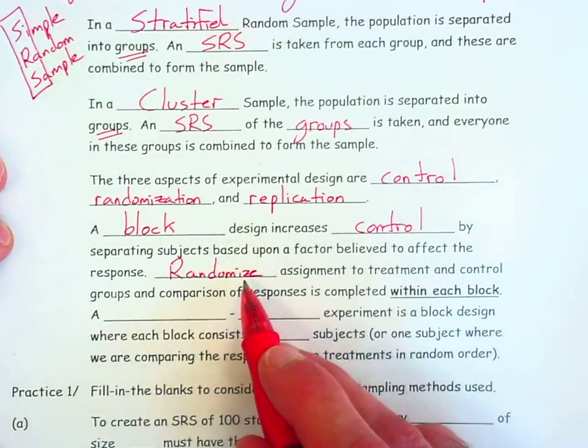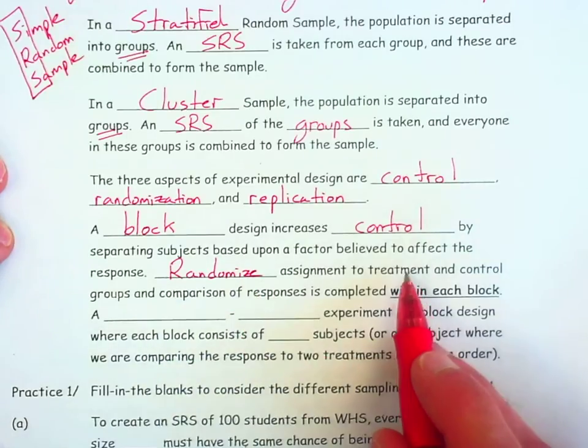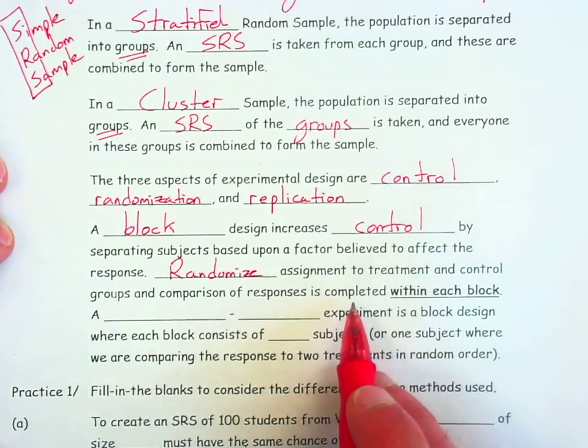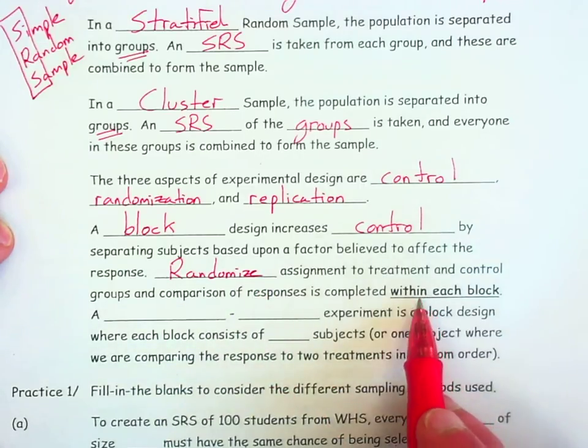We randomize assignment to treatment and control groups, and comparison of responses is completed within each block. So if we were doing an experiment where we had blocked upon gender, essentially we'd be doing an experiment on men where men are randomly assigned to treatment and control. And then again, we randomly assign women to treatment and control groups, and we compare the responses specifically for women. Comparisons are done within each block.